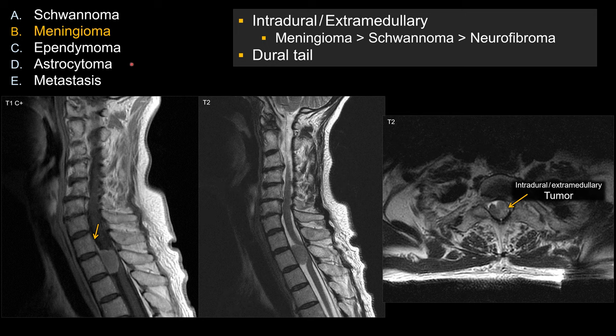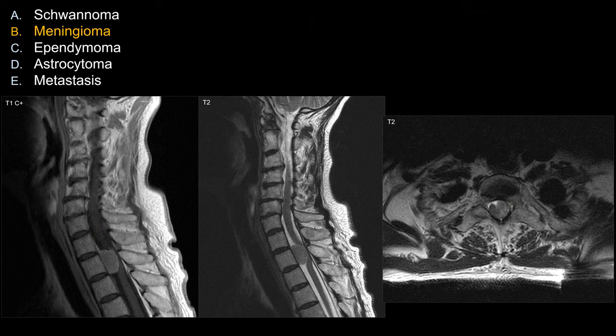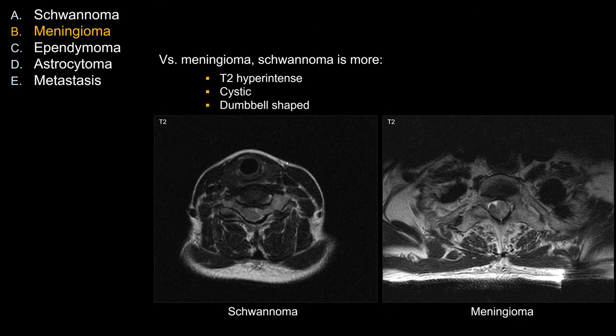What about other choices that do not work as well? For example, schwannoma. On a board exam, there are features that would make me pick schwannoma or neurofibroma over meningioma. On T2-weighted sequences, schwannoma or neurofibroma tend to be relatively bright compared to meningioma. Also, if I see cystic degeneration, that tends to occur with schwannoma as opposed to meningioma. Lastly, if I see a classic dumbbell shape — an intraspinal component with expansion of the neural foramen and extension into the extraforaminal zone — that dumbbell shape is really characteristic of schwannoma and not meningioma.